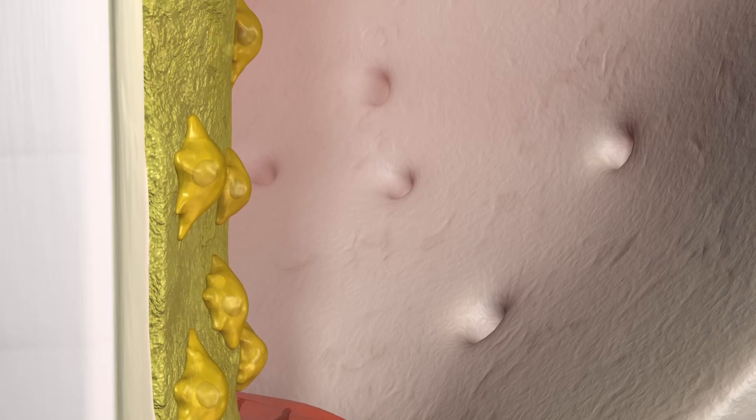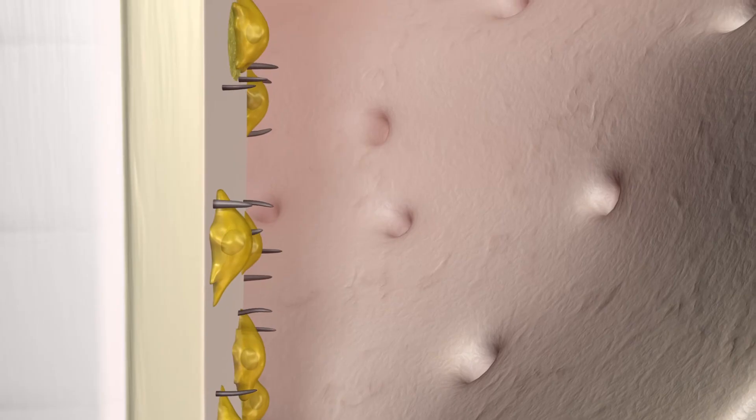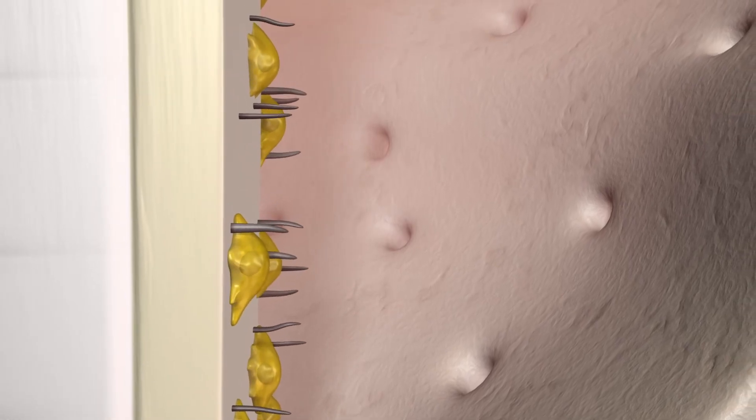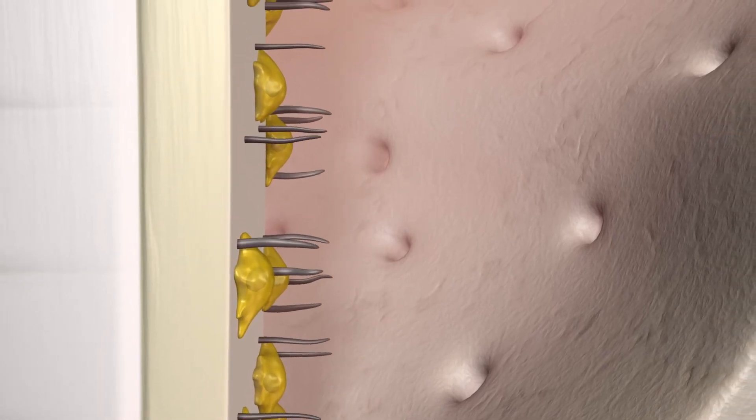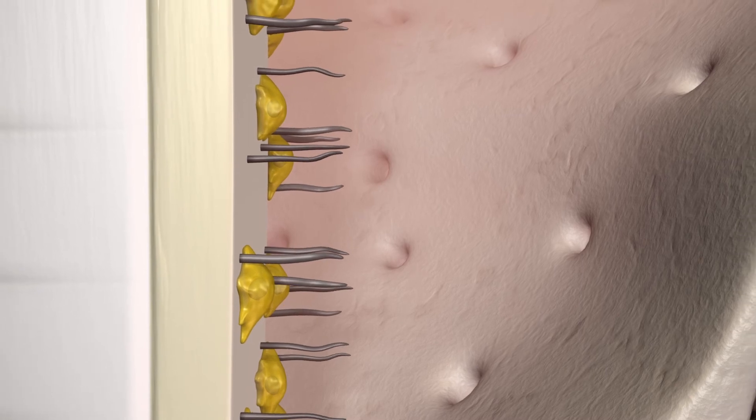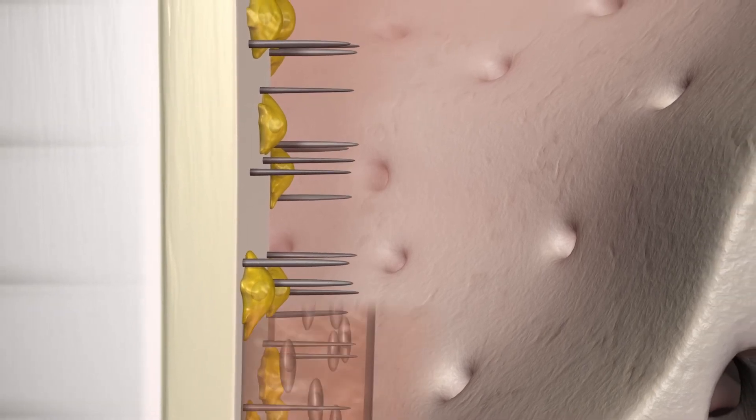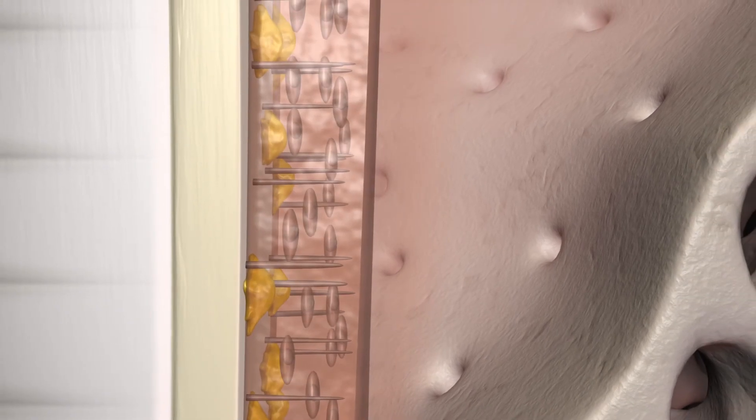The new cement layer formed by Straumann Emdogene increases in thickness and the periodontal ligament fibers are extended. Meanwhile, the periodontal defect has been filled with newly formed periodontal ligament tissue.